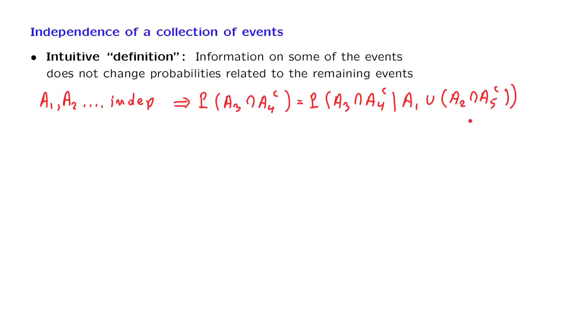The important thing to notice here is that the indices involved in the event of interest are distinct from the indices associated with the events on which I'm given some information. I'm given some information about events a1, a2, and a5, what happens to them, and this information does not affect my beliefs about something that has to do with events a3 and a4.